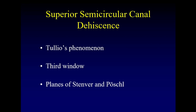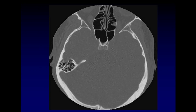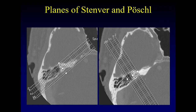Many people have advocated for the planes of Stenver and Paschel as a way of carefully looking for superior semicircular canal dehiscence. The reason we need separate planes is that it can be a very near thing whether the superior semicircular canal is intact or not on an axial image. Reformatted images perpendicular to the superior semicircular canal are the plane of Stenver, and those along the canal are the plane of Paschel.